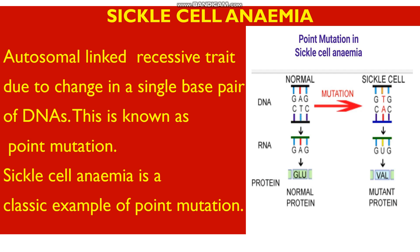The mutation is due to a single base pair change in the DNA, and this mutation is called a point mutation. Here you can see the normal case and the sickle cell anemic individual. In the normal case, the base pairs of the two DNA strands are GAG and CTC — the nitrogenous bases guanine, adenine, cytosine, and thymine.